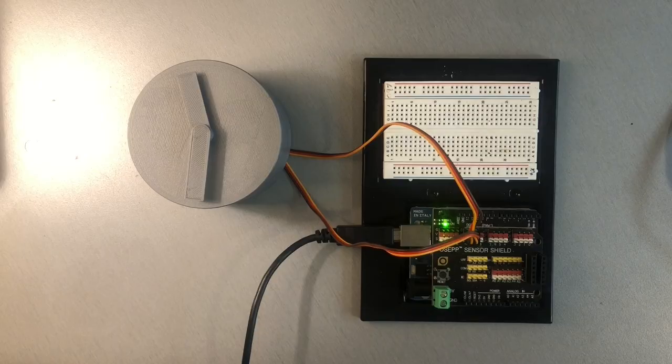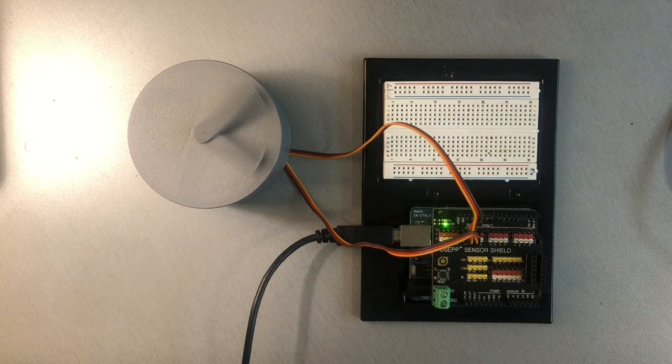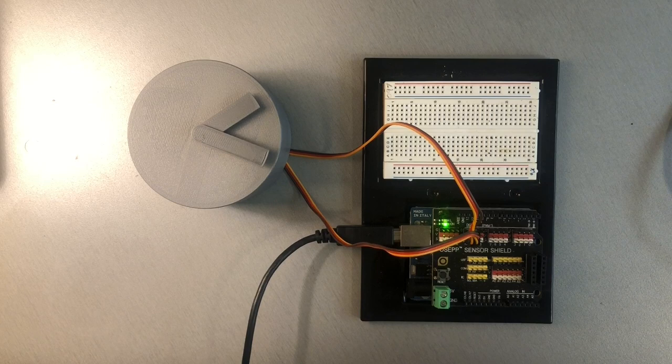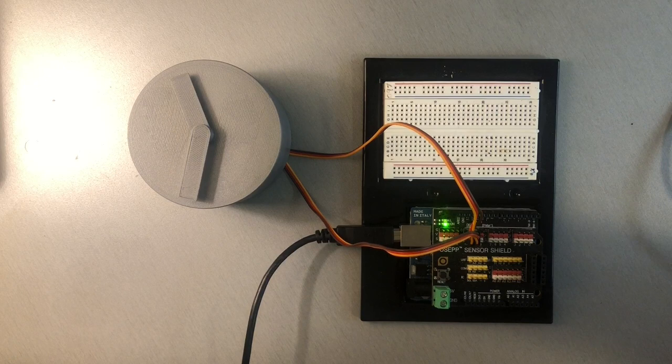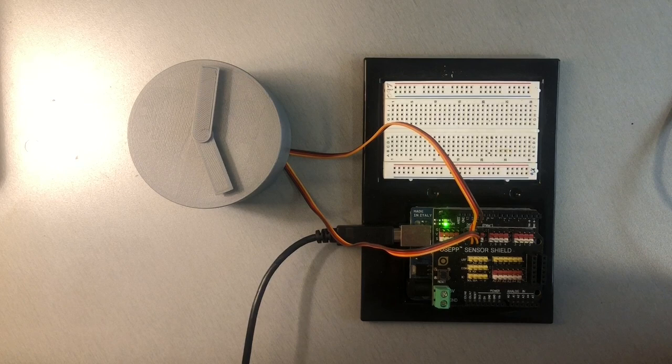With the interface looking good I threw together some code to rotate the servos 180 degrees and voila, we have motion. Straight away you could tell the motion is pretty jerky, so need to look at the interface between the gears as well as the interface between the arms and the hole on the main body.